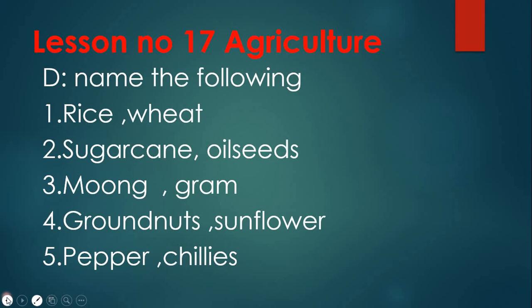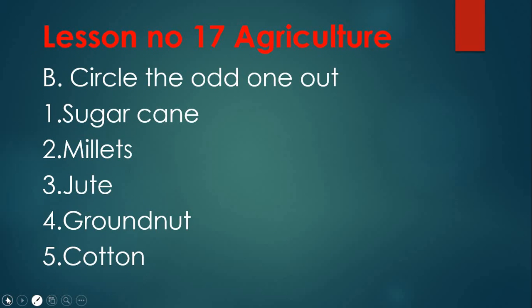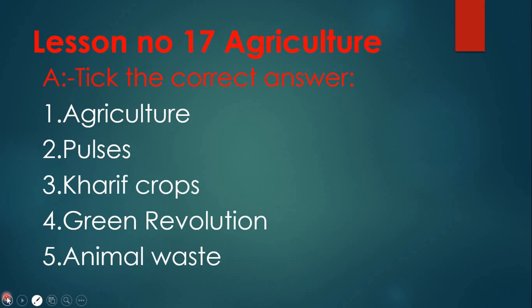To recap the sections: A is take the correct answers, B is circle the odd one out, C is fill in the blanks, D is name the following, and E is answer the following questions. This completes lesson number 17 — Agriculture. Please take it down neatly and keep your notes ready.